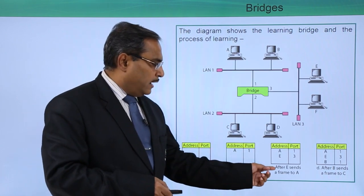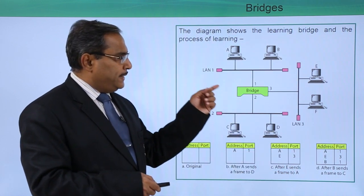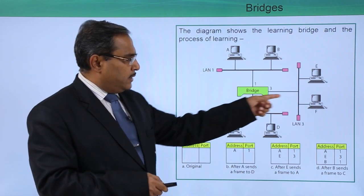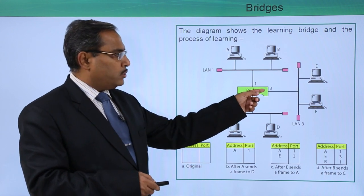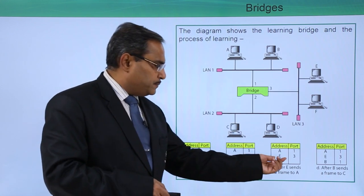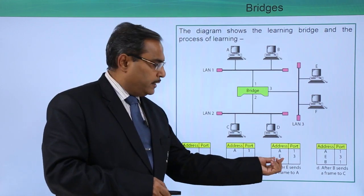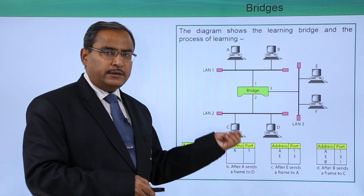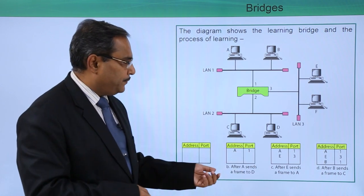Now whenever after E sends a frame to A, when E will be sending a frame to A, that means E is connected with port number 3. This particular entry will be written - yet E will not be written, but the respective MAC address of E will be written.